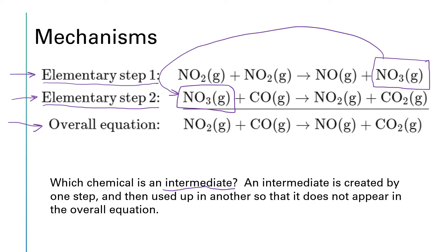When we add these two reactions together, the NO3s cancel out, so it does not appear in our overall reaction. I think of intermediates as being like scaffolding. When there's construction on a building, the scaffolding gets built to help all of the craftsmen do the construction. But then at the conclusion of the construction project, all of that scaffolding is torn down. So it gets made, but then it gets consumed.